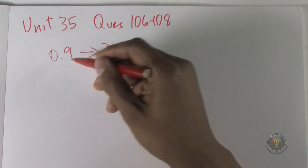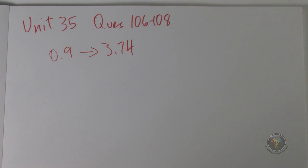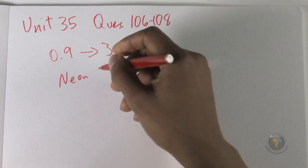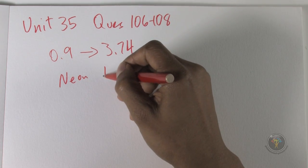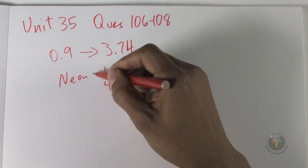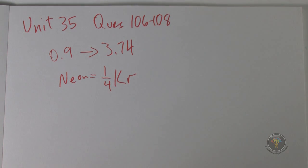So that means the density of neon is one quarter the density of krypton. Neon's density is one quarter the density of krypton.